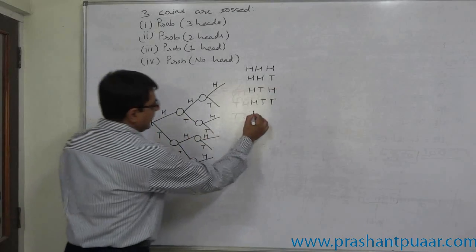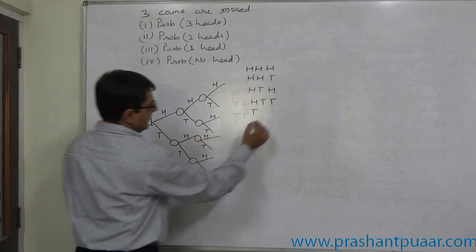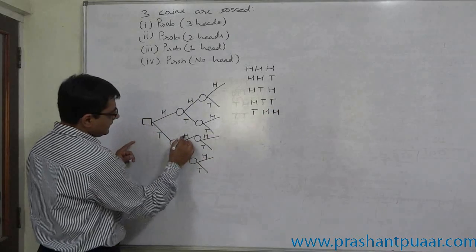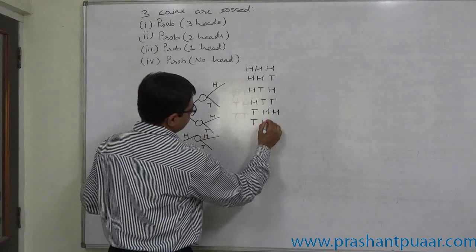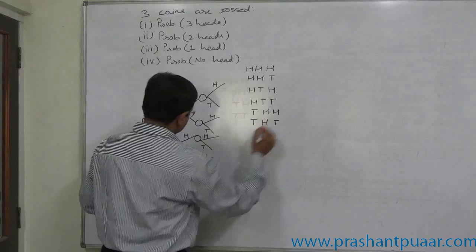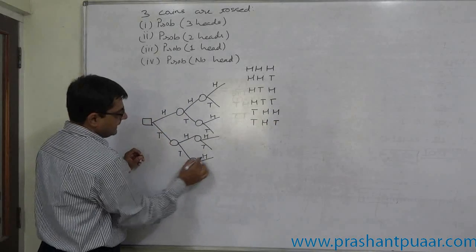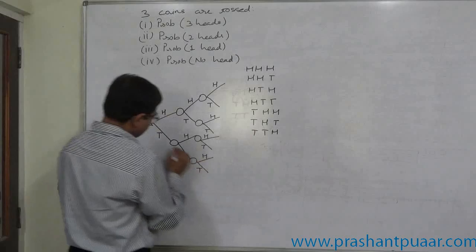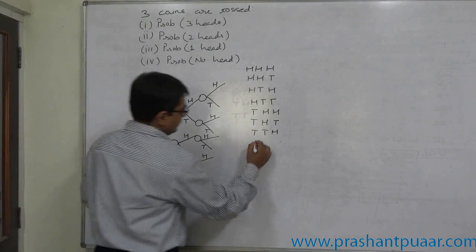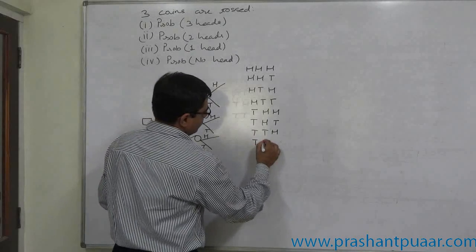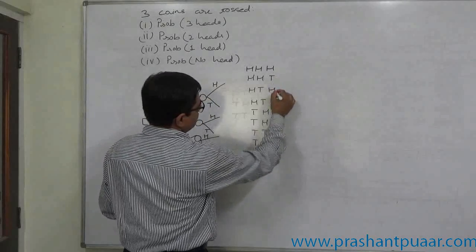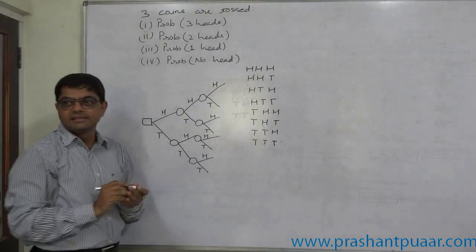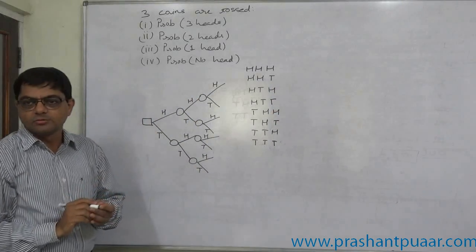Now tail, head, head. Tail, head, tail. Tail, tail, head. Tail, tail, tail. One, two, three, four, five, six, seven, eight — these eight outcomes are possible.